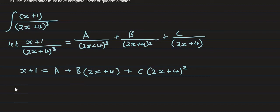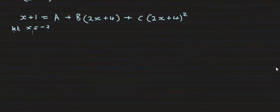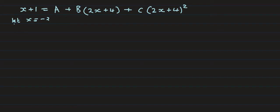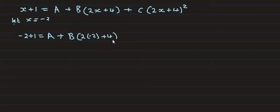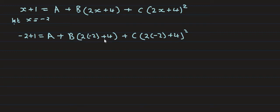We let x equal to minus 2, then we substitute. On the left we have: 1 minus 2 plus 1. On the right we have: A plus B into 2 multiplied by minus 2 plus 4, plus C into 2 into minus 2 plus 4, all squared.